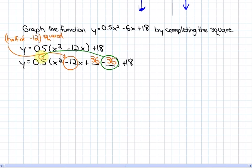Step number 3. We have to distribute the negative constant term out of the brackets, and that looks like negative 36 times 0.5 is negative 18, and then plus 18.